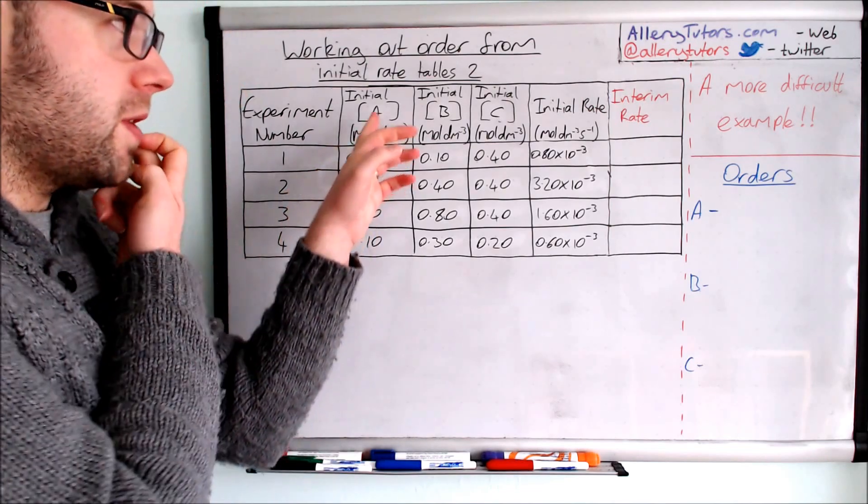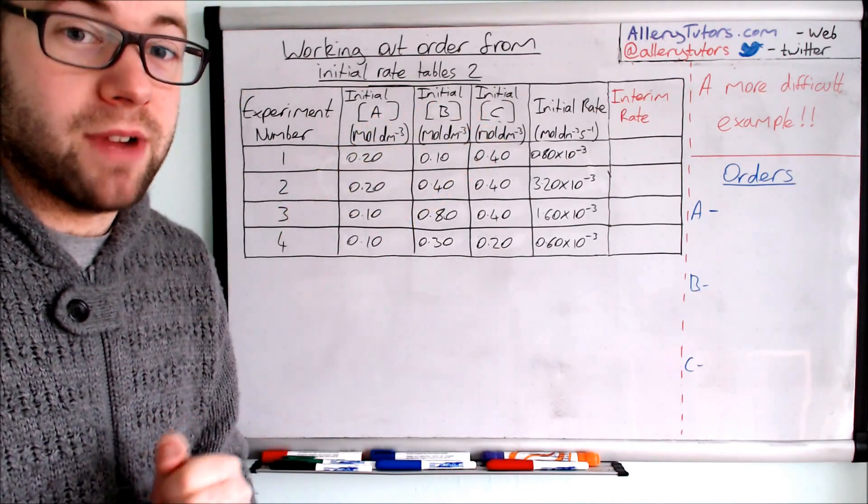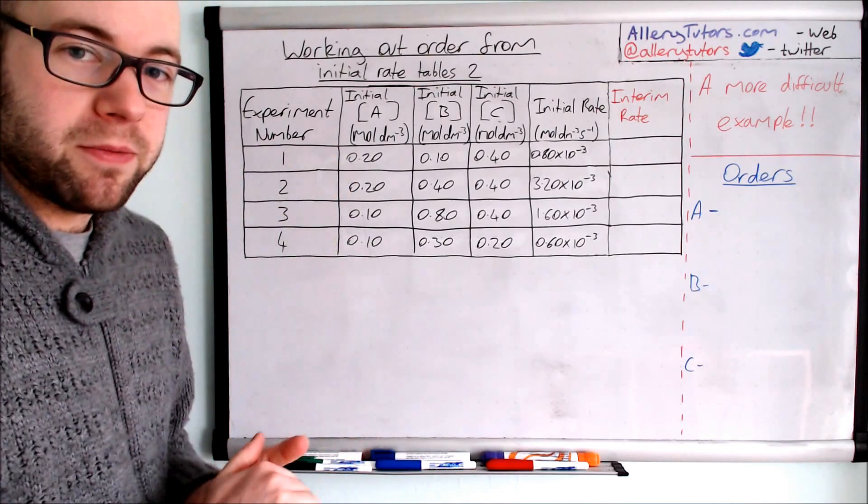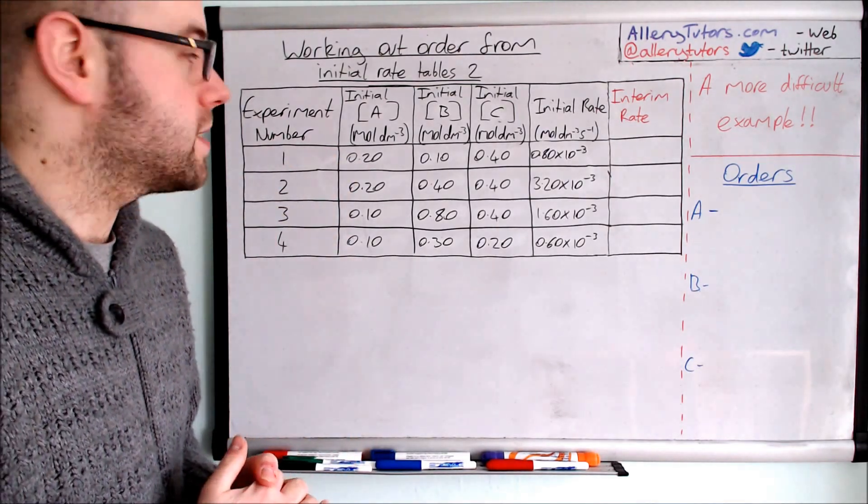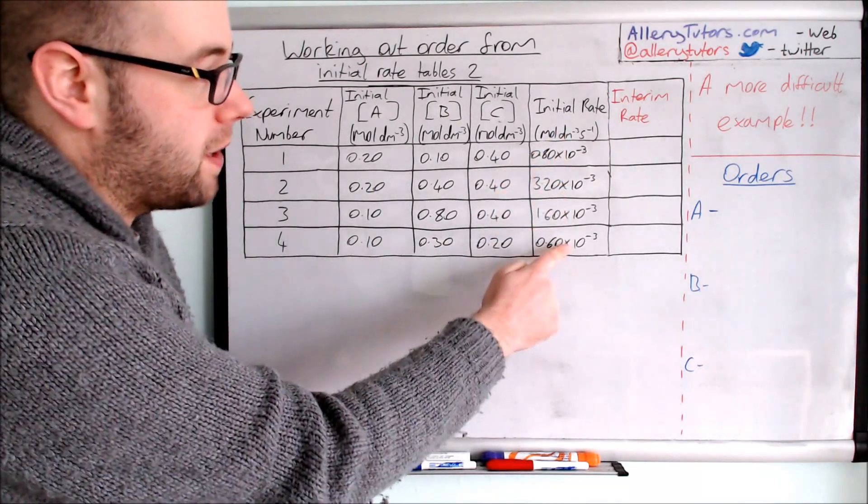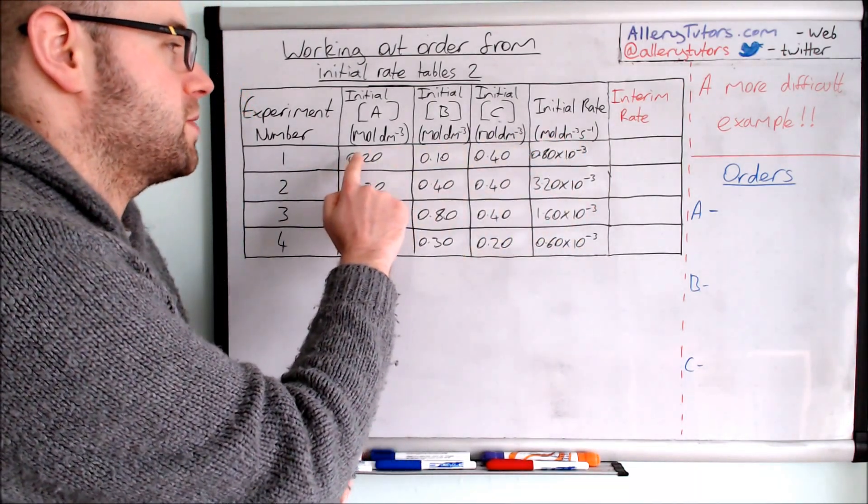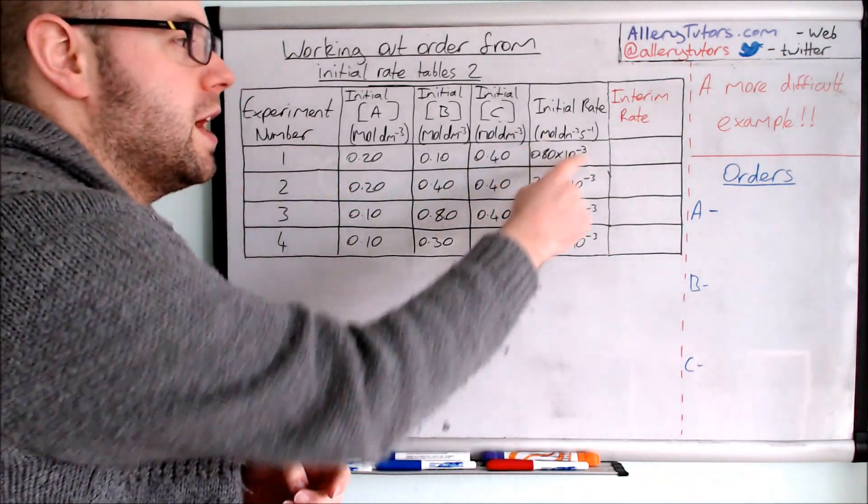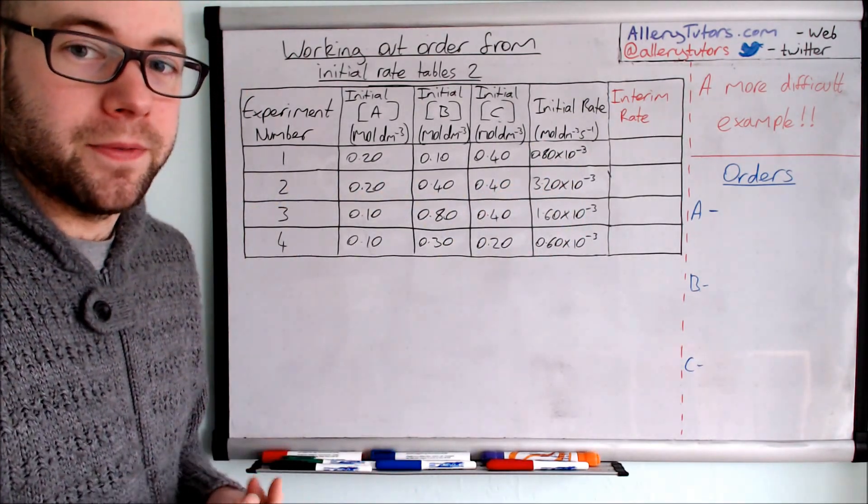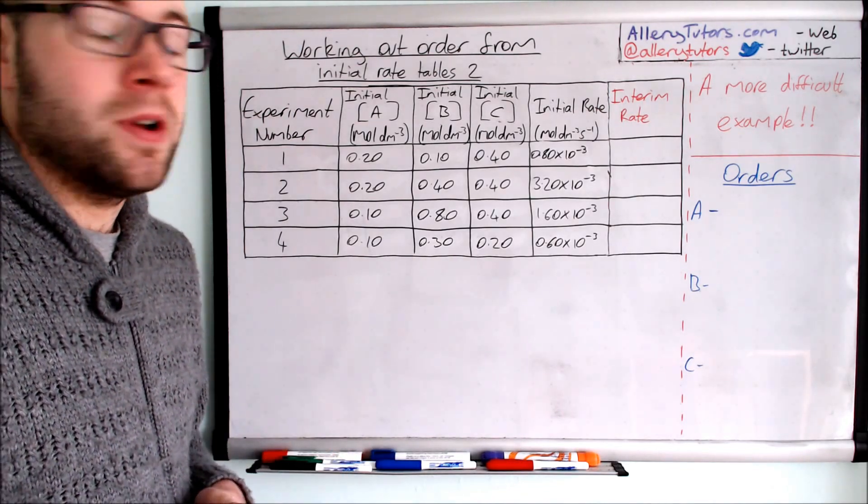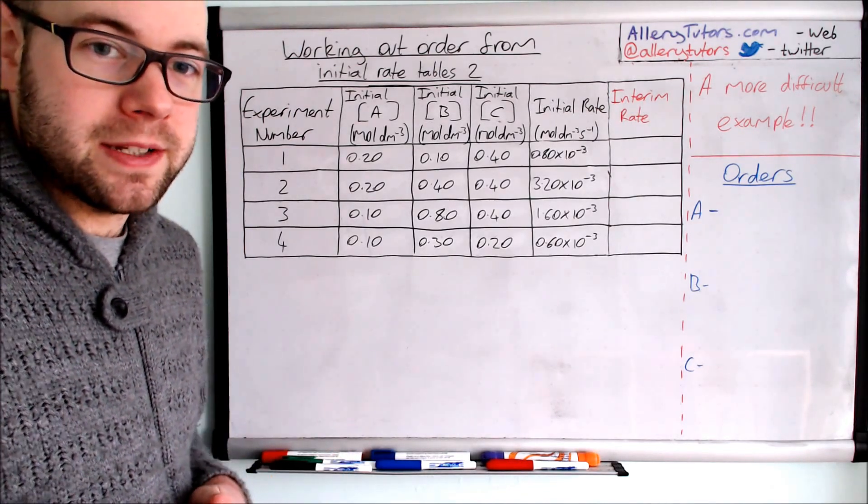You can see we've got three different reagents: A, B and C, and we have four different experiments that we've repeated. We have the rates as well for each of these experiments. We've obviously mixed A, B and C in this ratio of concentrations and we've measured the rate of this reaction. What we need to do is work out the orders of A, B and C.